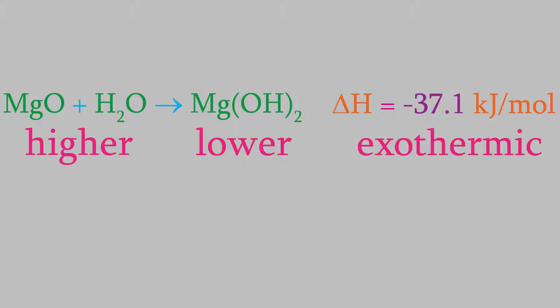A second thing to notice is the units of the enthalpy, kilojoules per mole. It's per mole, which means that 37.1 kilojoules, which is 37,100 joules, is released for every mole of the product, magnesium hydroxide.